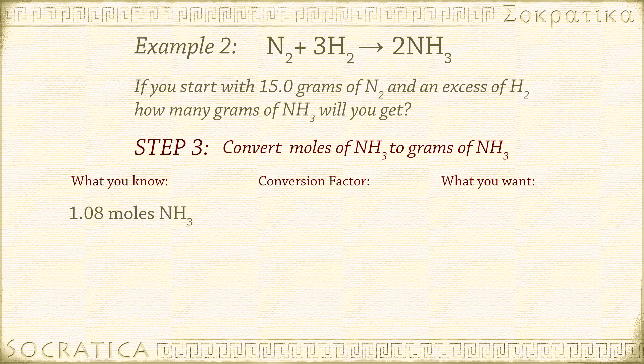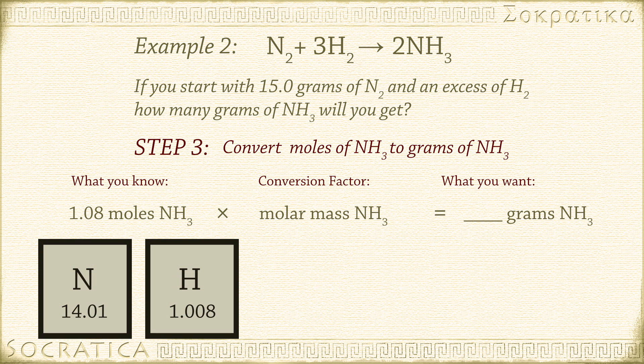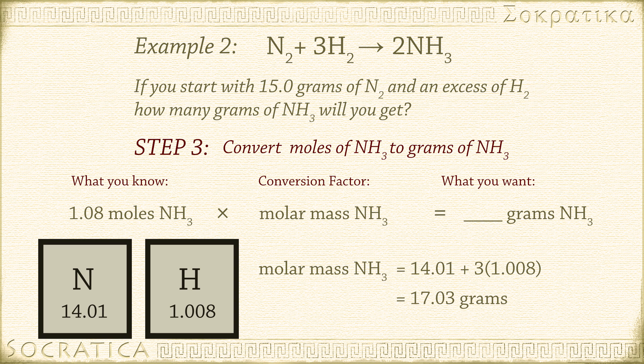1.08 moles of NH3 times the conversion factor equals some number of grams of NH3. Again, we get the molar mass from the periodic table. Molar mass of NH3 equals 14.01 plus 3 times 1.008 equals 17.03 grams per mole.